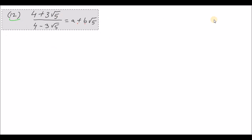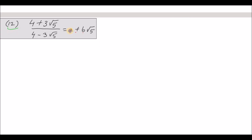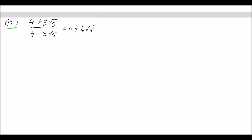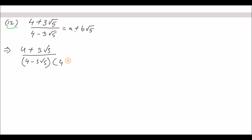Question number 12. The expression is 4 plus 3 root over 5, divided by 4 minus 3 root over 5, equal to a plus b root over 5. To solve, we rationalize the denominator by multiplying numerator and denominator by the conjugate 4 plus 3 root over 5.